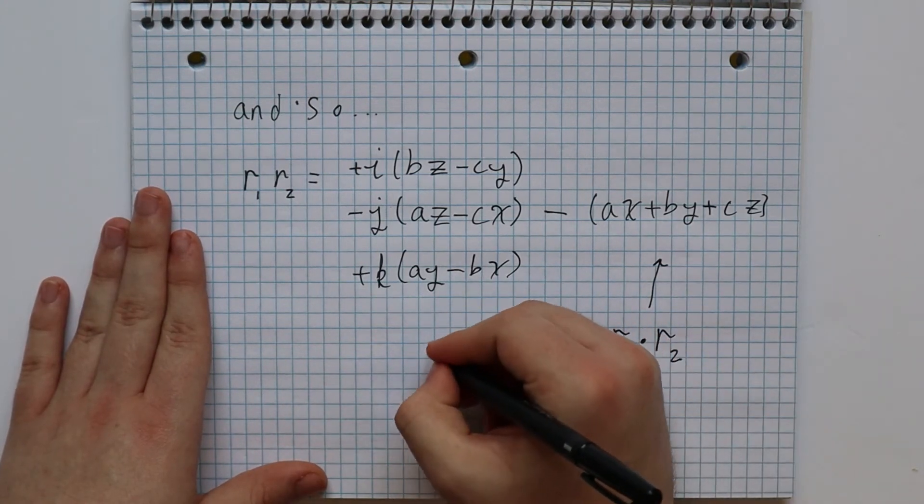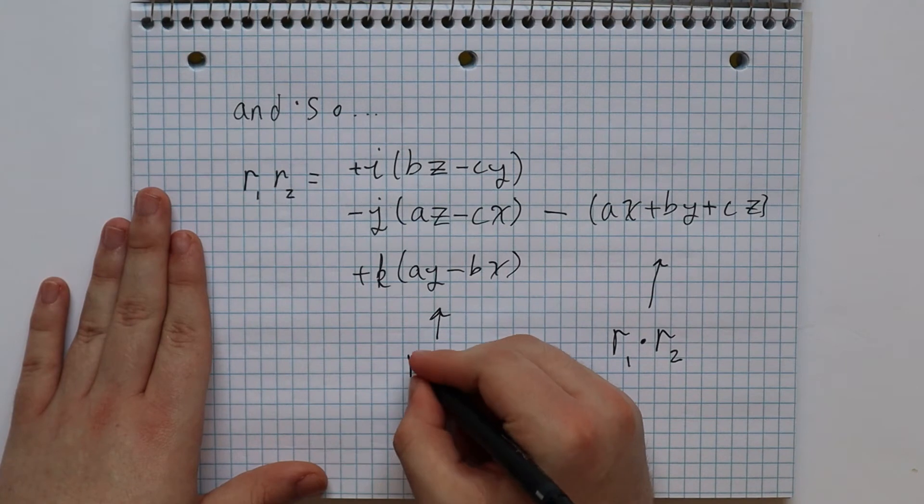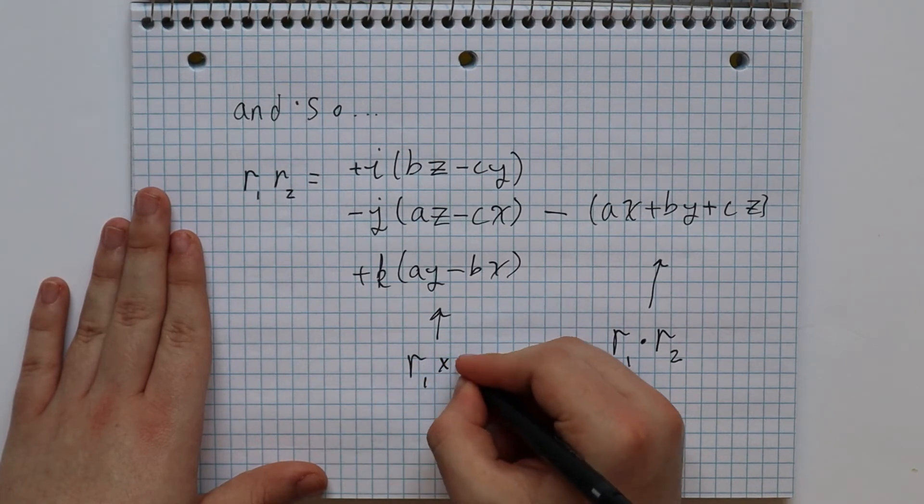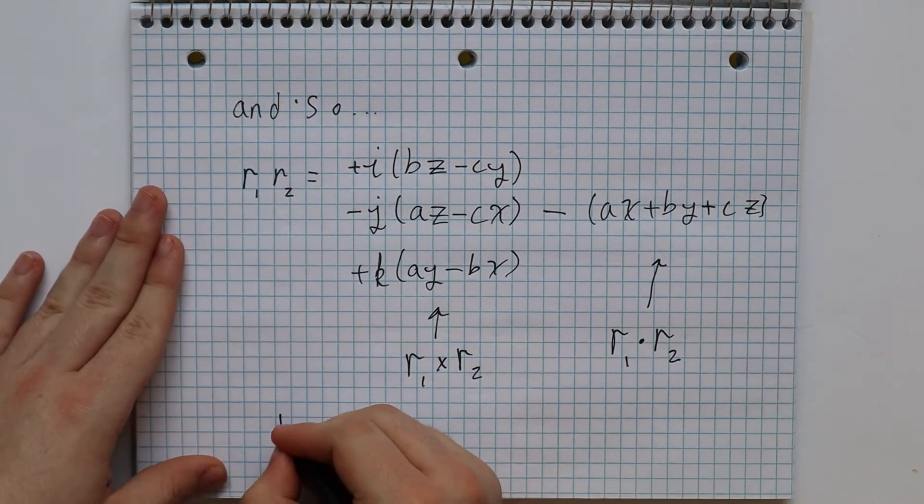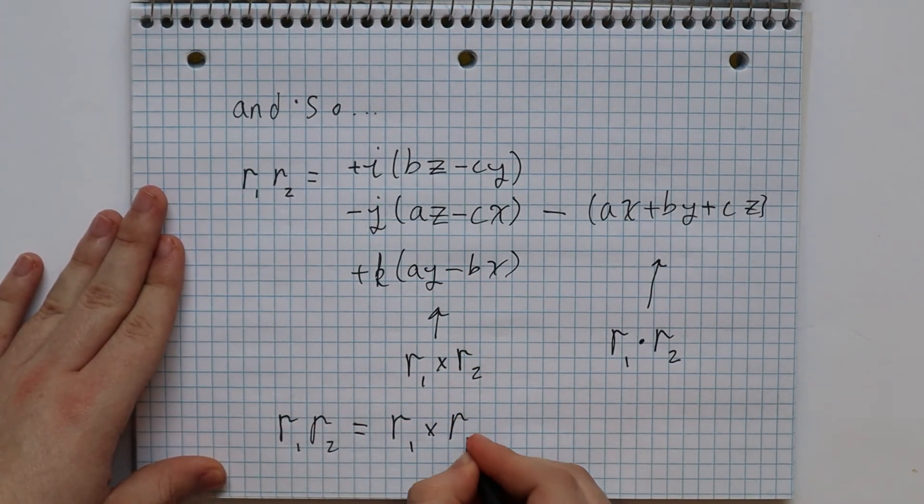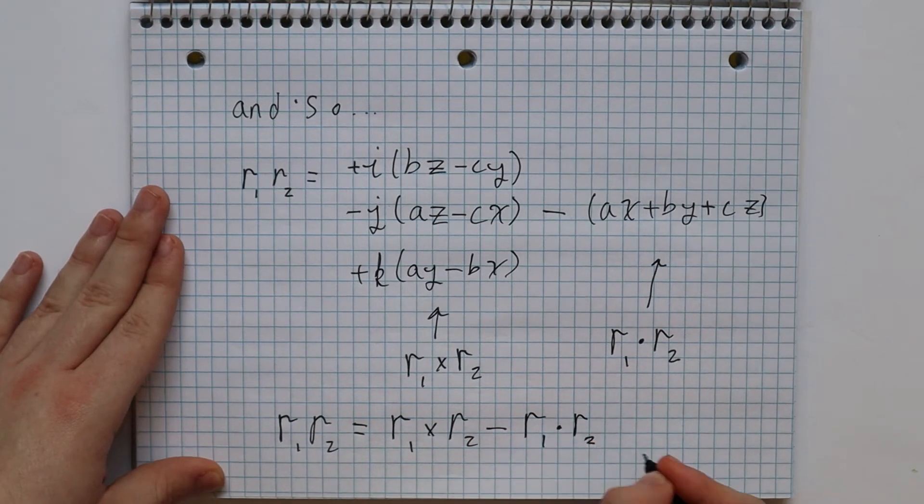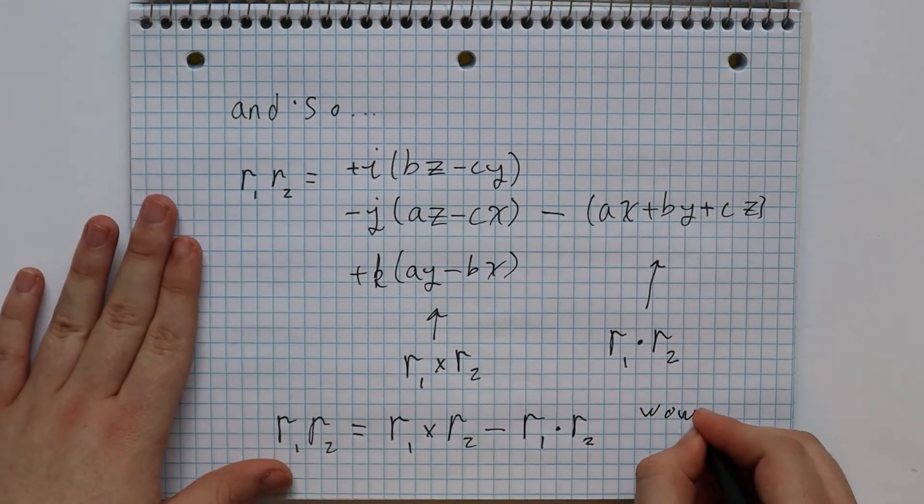Now what about the other terms? They are exactly the cross product of r1 and r2 respectively. And so it turns out that the product of r1 and r2 is equal to the cross product of r1 and r2 minus the dot product of r1 and r2. Cool, right?